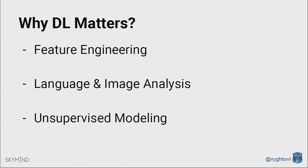Where deep learning is being used a lot is definitely around language and image analysis. Where it's getting interesting and where research is really starting to investigate more is around unsupervised learning or unsupervised modeling. With labeled data you have supervised learning; with unlabeled data, it's unsupervised. We have a lot of unlabeled data out there, and if we can start to find real patterns in it, that's where the value and excitement for deep learning lies.